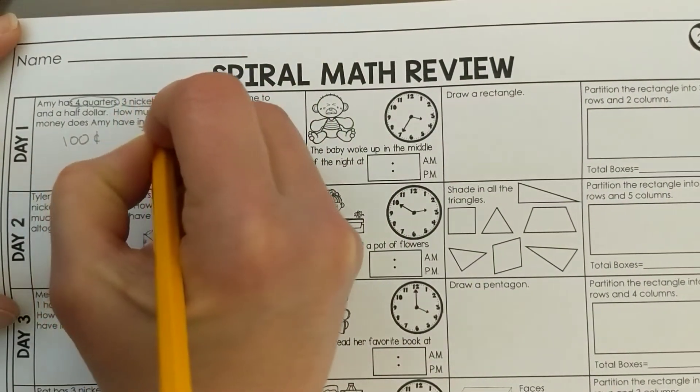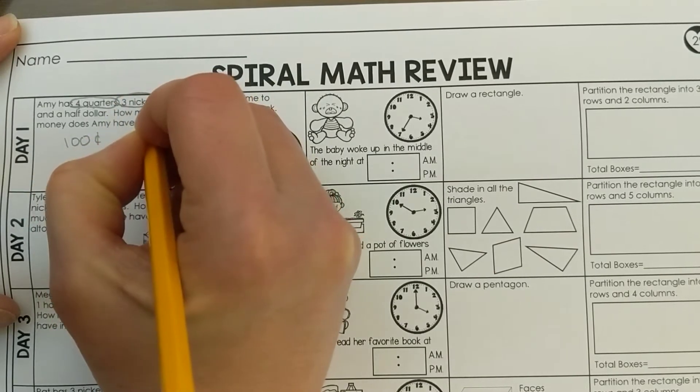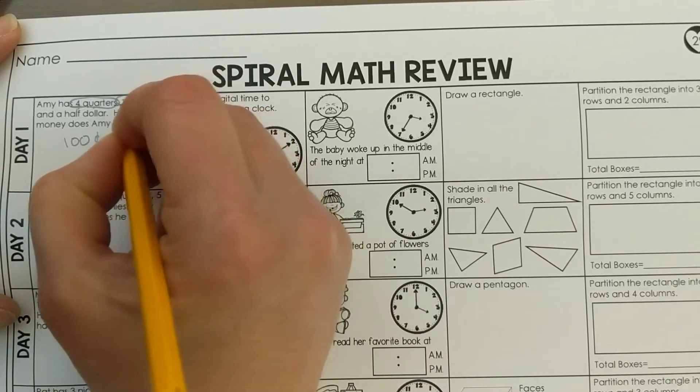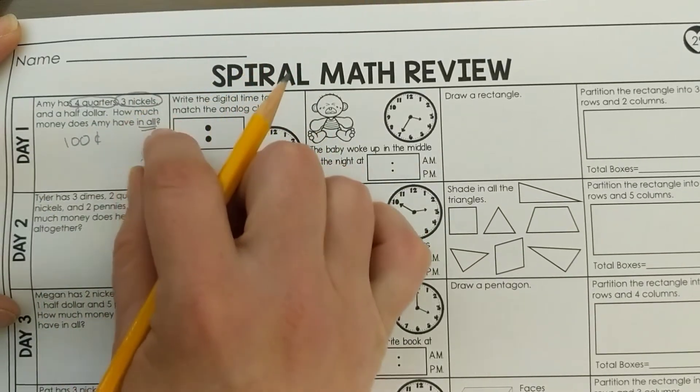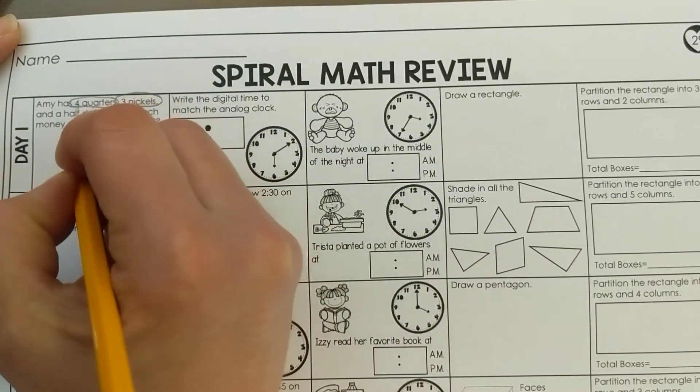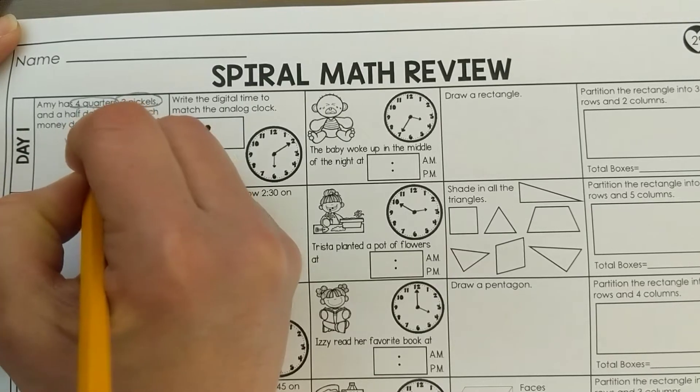Three nickels. A nickel is five cents. If I need three of them, I'm going to count by five three times: 5, 10, 15. Three nickels is 15 cents.